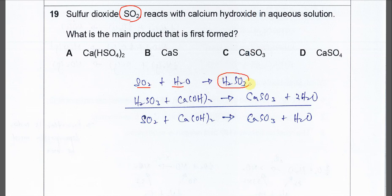The sulfurous acid, after it's formed, will further react with the calcium hydroxide in the solution to form calcium sulfite.